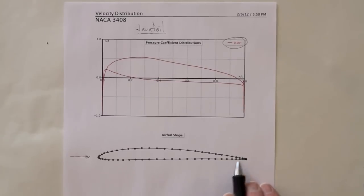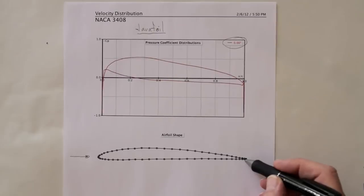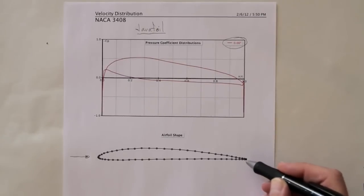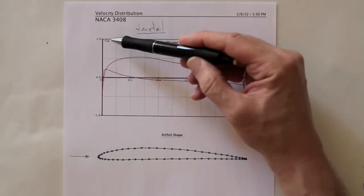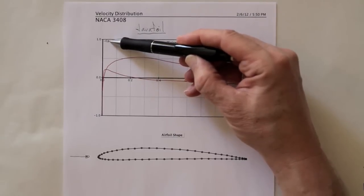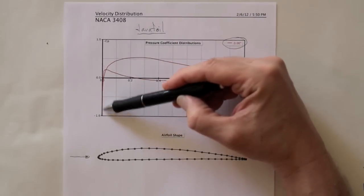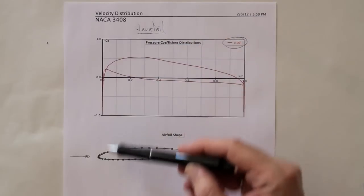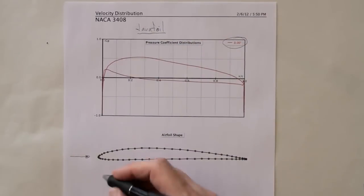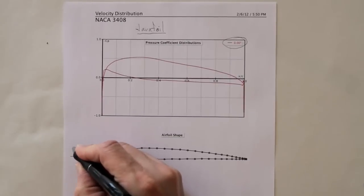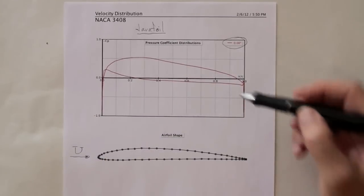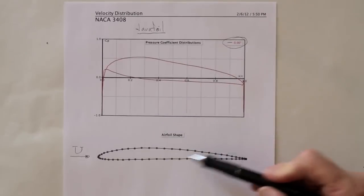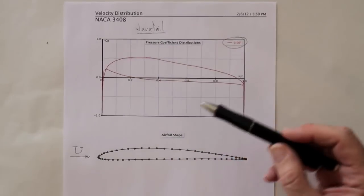So we can look at cruising performance for this particular airfoil and figure out the lift. Now this is a plot of pressure coefficient. Pressure coefficient is a dimensionless measure of pressure, so we don't have to repeat this calculation for a whole lot of different velocities. We can scale it relative to the velocity and just look at the pressure coefficient.